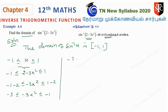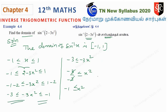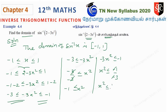So minus 3 less than or equal to minus 3x squared less than or equal to minus 1. Dividing by minus 3 and flipping the inequality: x squared less than or equal to minus 1 by minus 3, so minus minus cancels, giving x squared less than or equal to 1 by 3. Also, minus 3 divided by minus 3 gives 1, so 1 less than or equal to x squared.